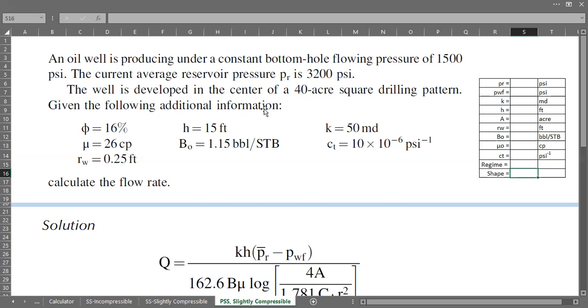Given the following additional information, we need to calculate the flow rate. I will list down all the data in this table first. Average reservoir pressure is 3200 psi and flowing bottom hole pressure is 1500, then the permeability 50 millidarcys, net pay thickness of 15 feet.